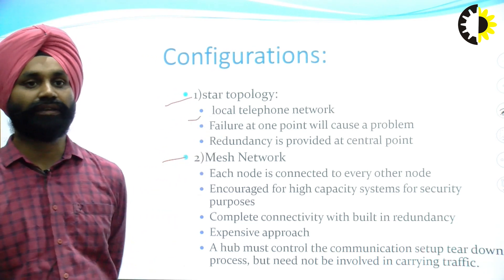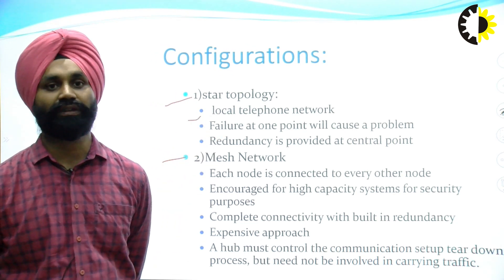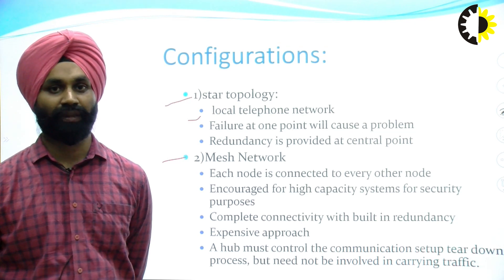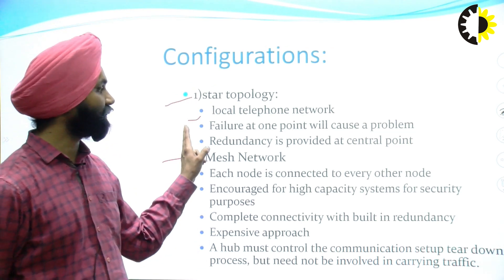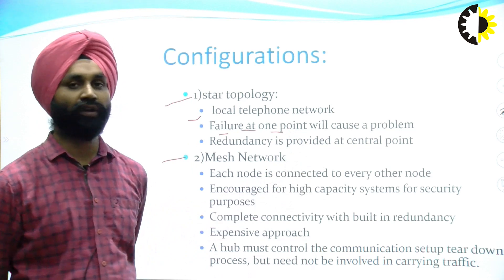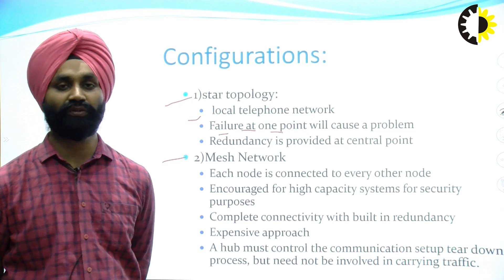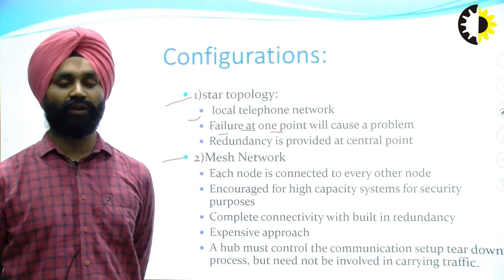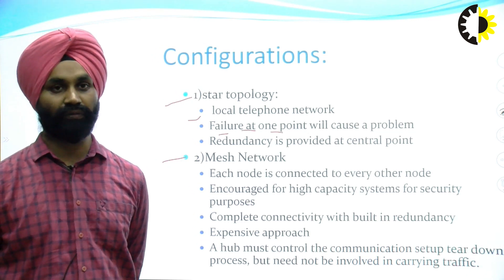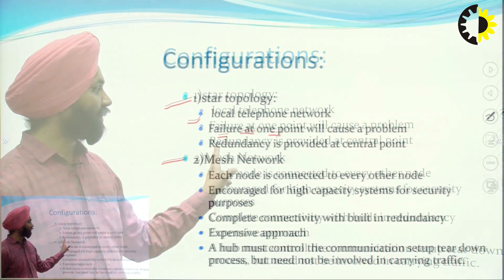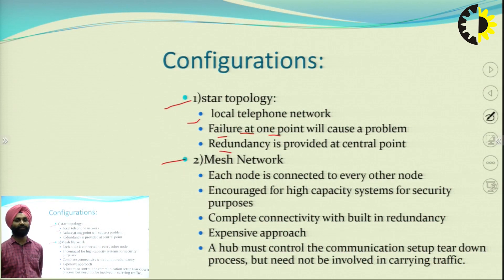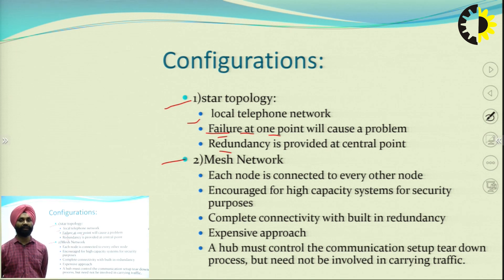In star topology, the satellite can act as a single point of failure for the whole communication network. If the satellite goes down, the whole communication network will go down. Redundancy is provided at the central point so that if a failure at that point occurs, we need to have a backup.